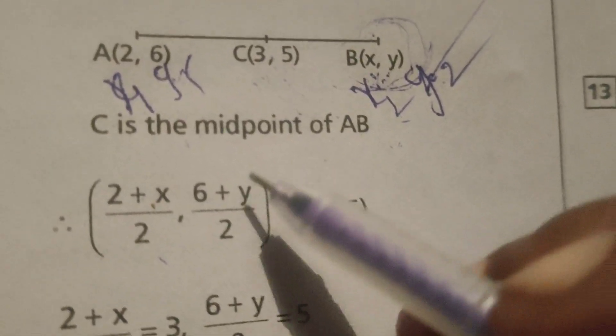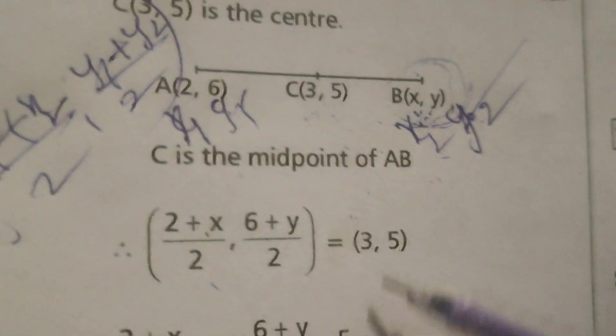Then we know that the midpoint formula is (x₁ + x₂)/2, (y₁ + y₂)/2.